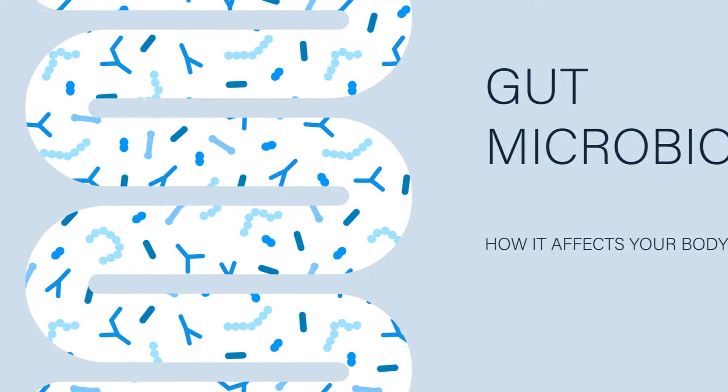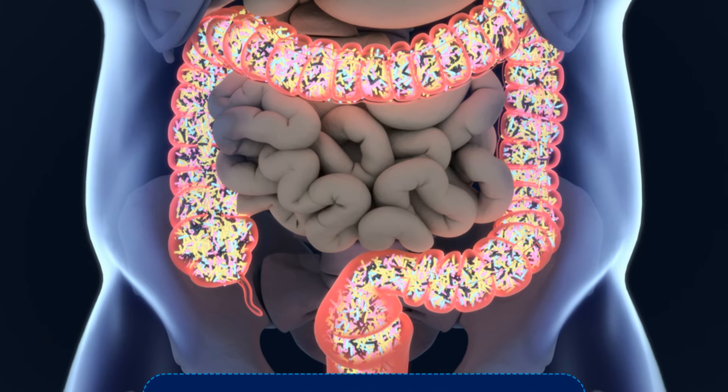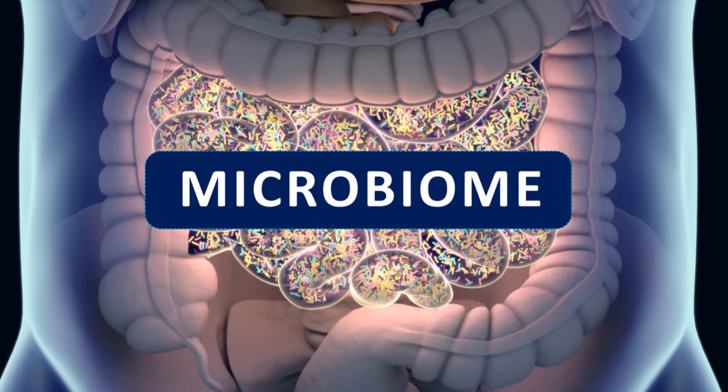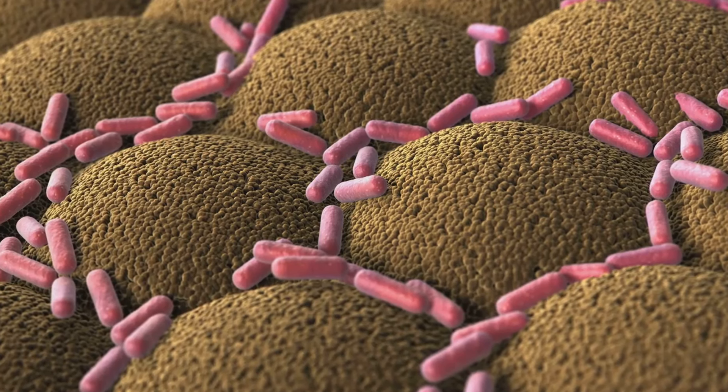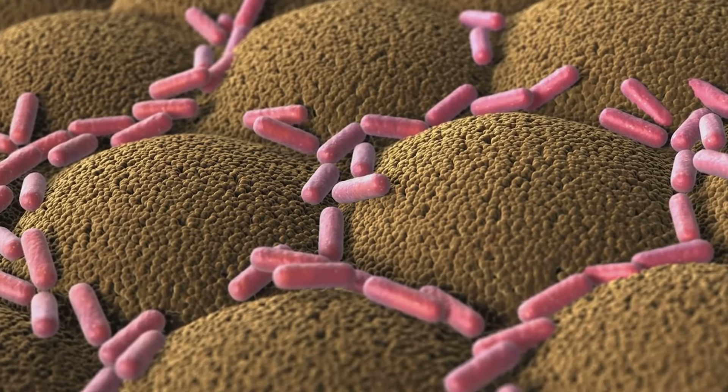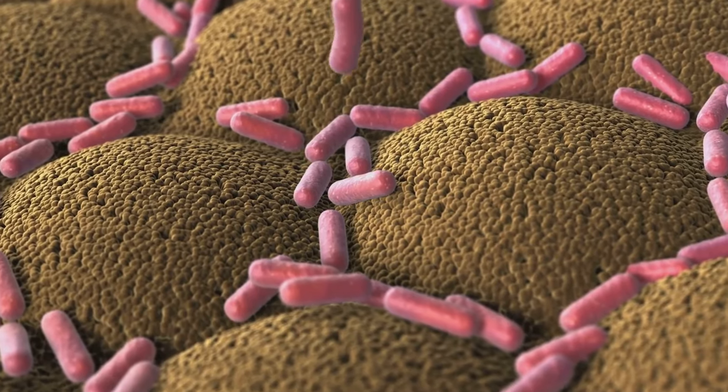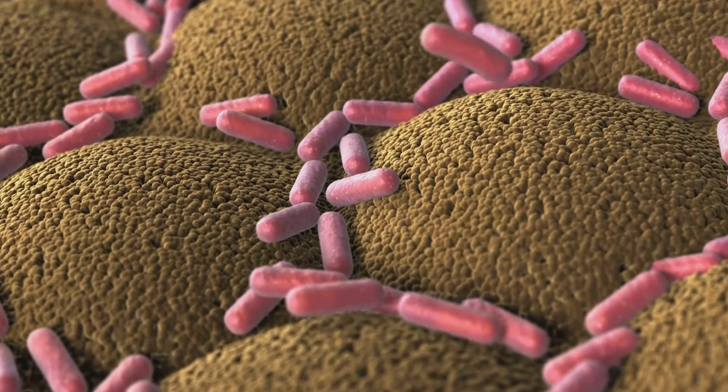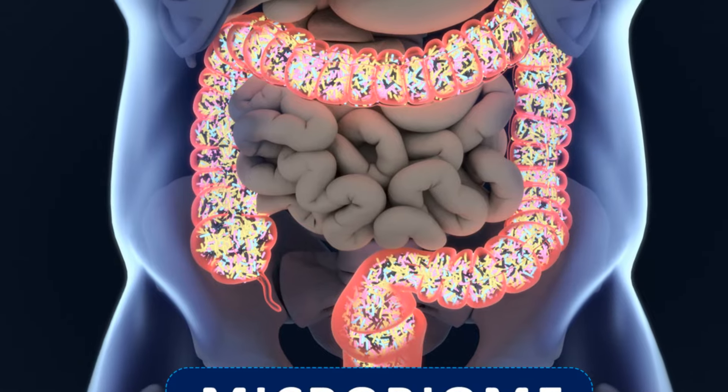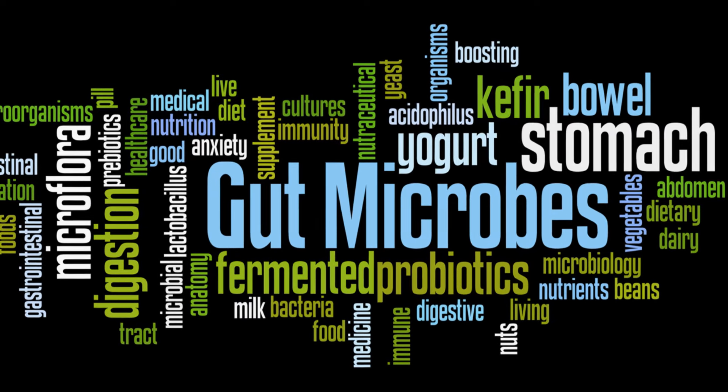Our microbiome helps us digest food, synthesizes essential vitamins, trains our immune system, and even influences our mood. Take our gut, for instance. It's a bustling city of microorganisms, with more than a thousand different species living in harmony. These gut microbes break down complex carbohydrates, fiber, and proteins that we can't digest on our own. They produce short-chain fatty acids, which provide energy for our gut cells and have anti-inflammatory effects.